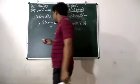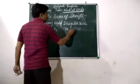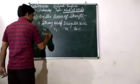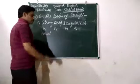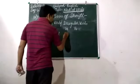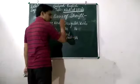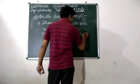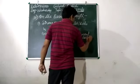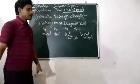These are V1, V2, V3, and V4. Present form is V1, past form is V2, past participle form is V3, and present participle form is V4.